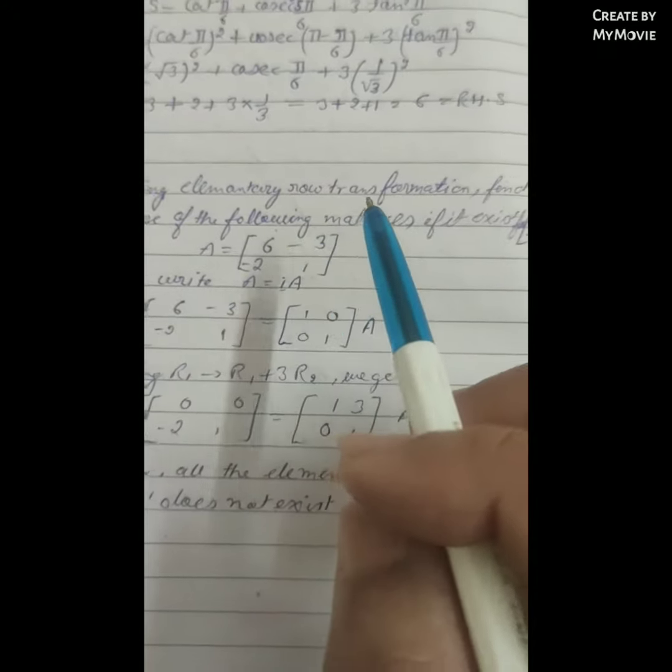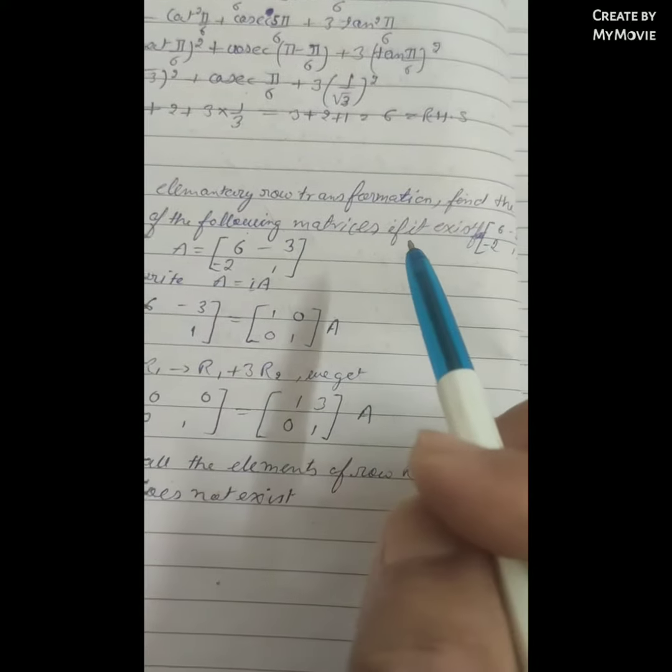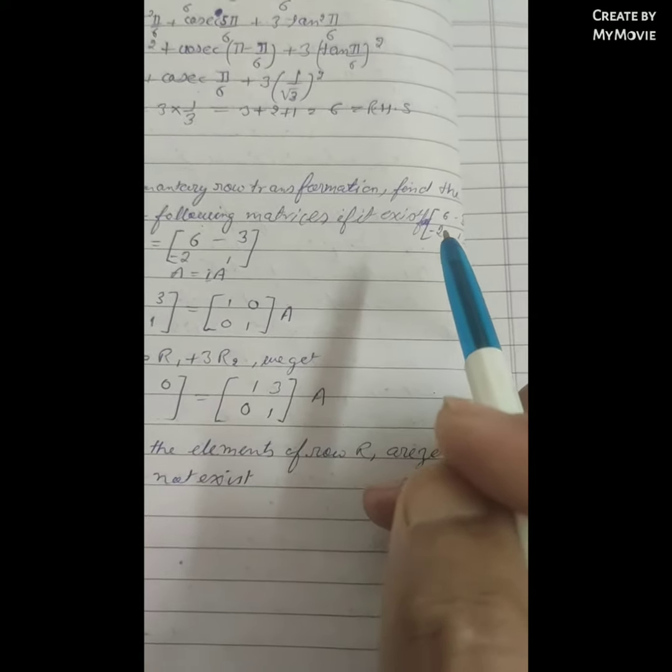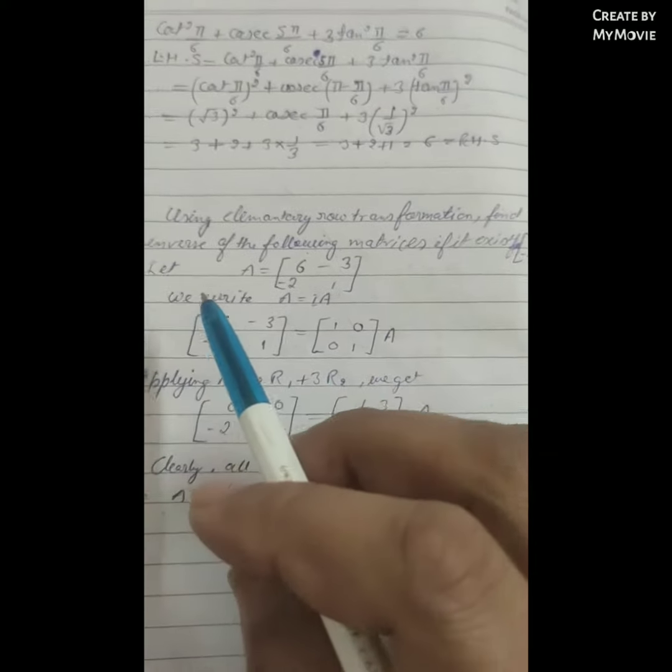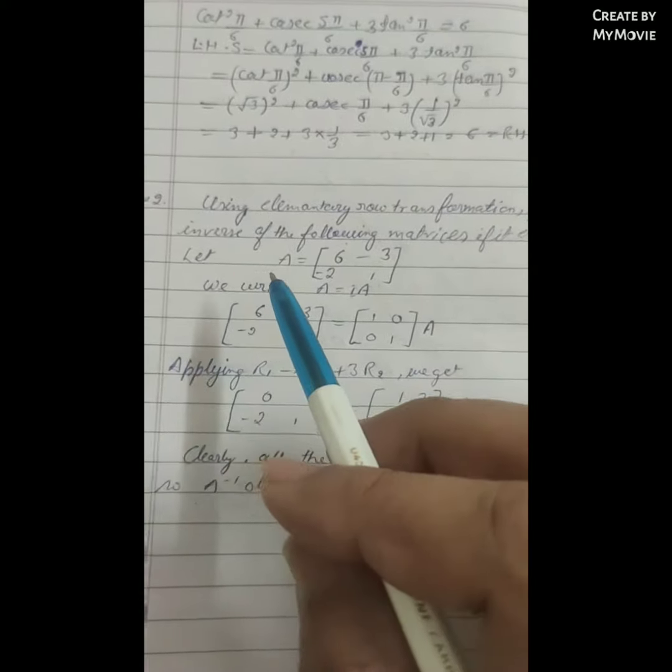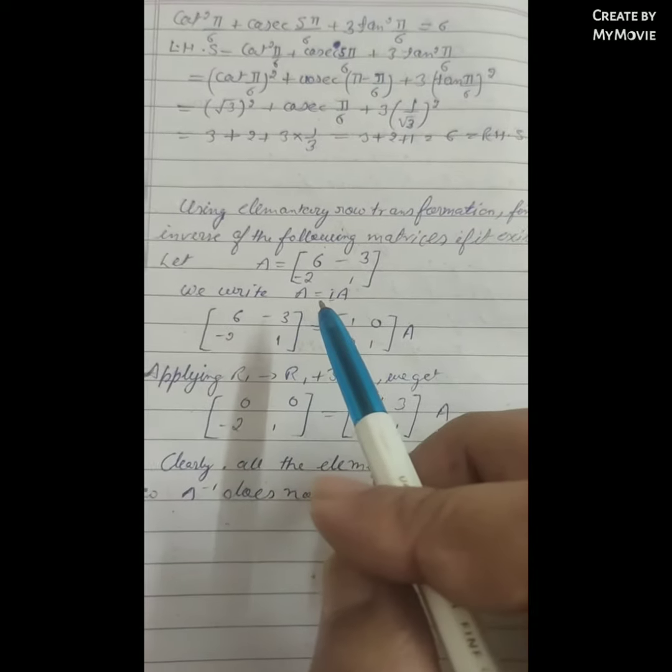Using elementary row transformation, find the inverse of the following matrix if it exists. The matrix is [6, -3; -2, 1]. Solution: Let A equal [6, -3; -2, 1]. We write A equals...